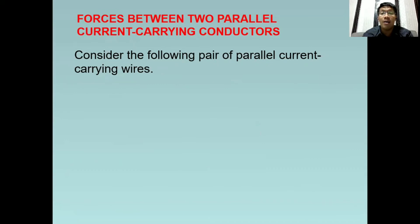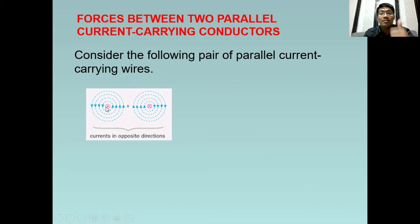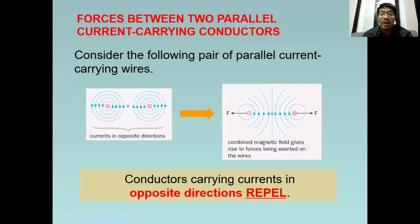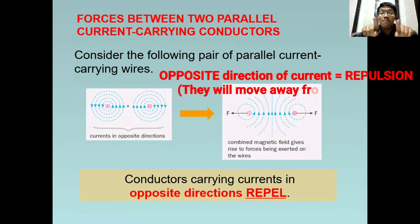Consider the following pair of parallel current carrying wires. In this example, we have opposite direction for current. So this one is outward towards you. Then the X represents inward or away from you. And the result will be like this. Combined magnetic field gives rise to forces being exerted on the wire. So anong mangyayari sa wire? Conductors carrying current in opposite direction will repel each other. So yung dalawang conductors natin ay magmove away. So tatandaan natin, pag opposite ang direction nila, they will repel each other.